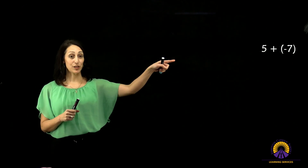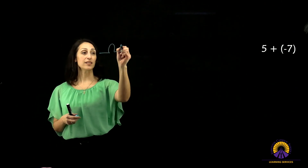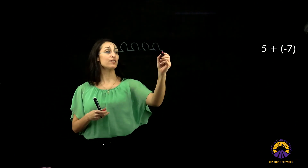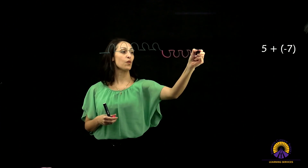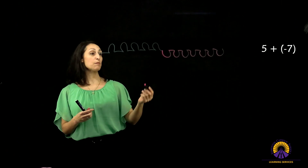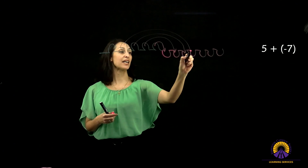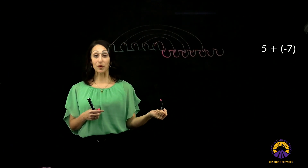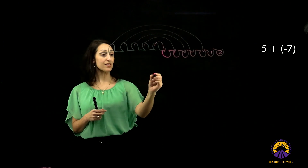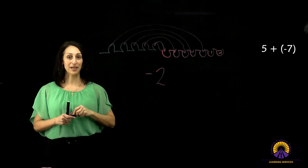Now I can take a positive integer of five and add a negative integer of seven — one, two, three, four, five — and now that negative integer of seven — one, two, three, four, five, six, seven. I can still use the same line of thinking and fill in my holes with all the piles of sand that I have. What I realize is that I have two left — one, two — but this time they're holes. And since they're holes, they're going to represent my negative number.